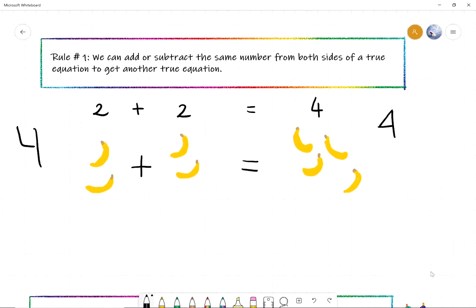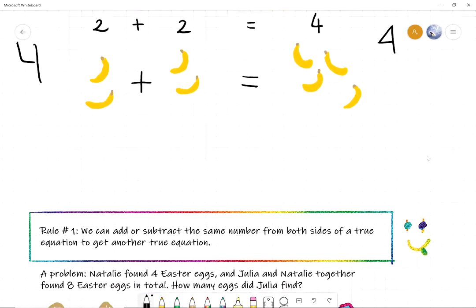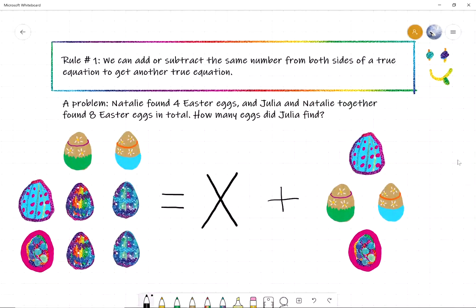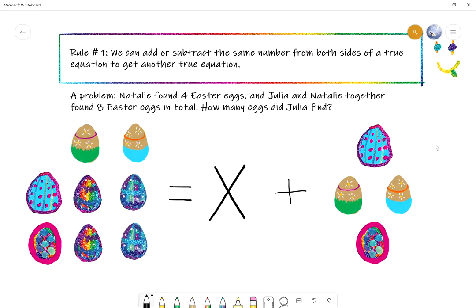So that's what you can do to equations with rule number one. You can add and subtract the same number to each side to get another true equation that is also true. Okay. Let's use rule number one to solve a problem about Easter eggs. So here is our problem. Natalie, can you read the problem? Natalie found four Easter eggs and Julia and Natalie together found eight Easter eggs in total. How many eggs did Julia find?